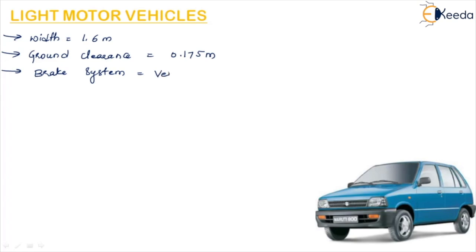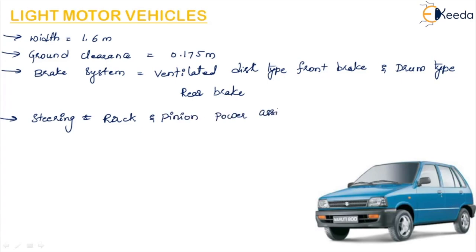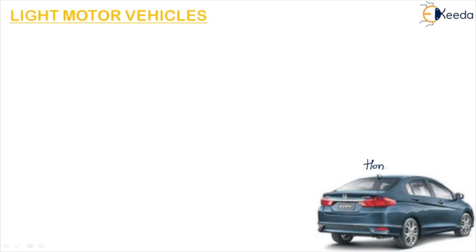The width of the Maruti 800 is approximately 1.6 meters. The ground clearance is approximately 0.175 meters. The brake system is ventilated disc type front brake and drum type rear brake. The steering system is rack and pinion power assisted. The kerb weight is 1150 kg.